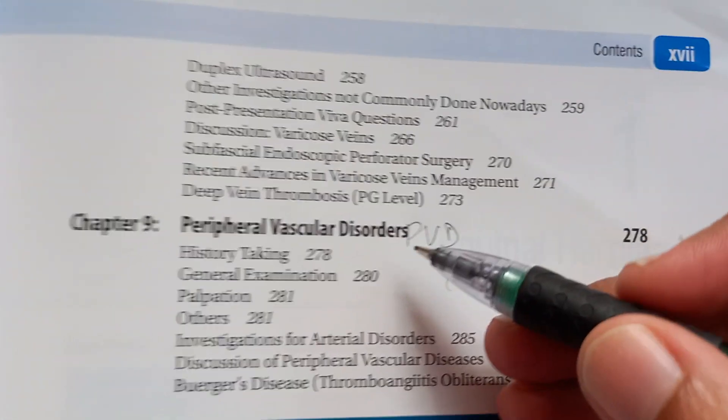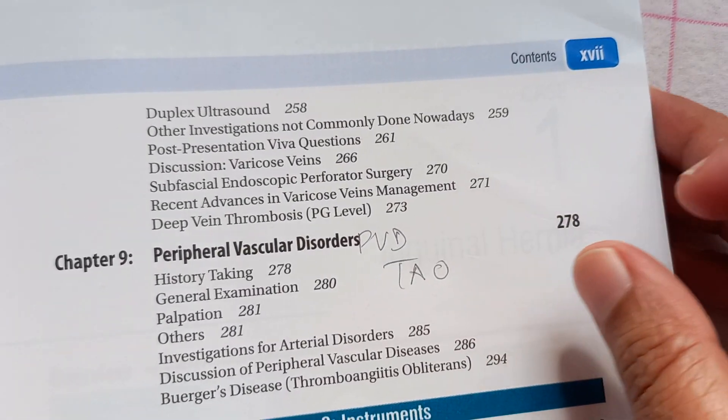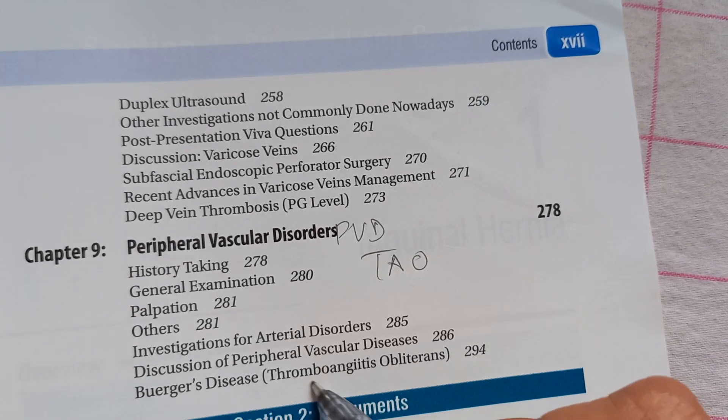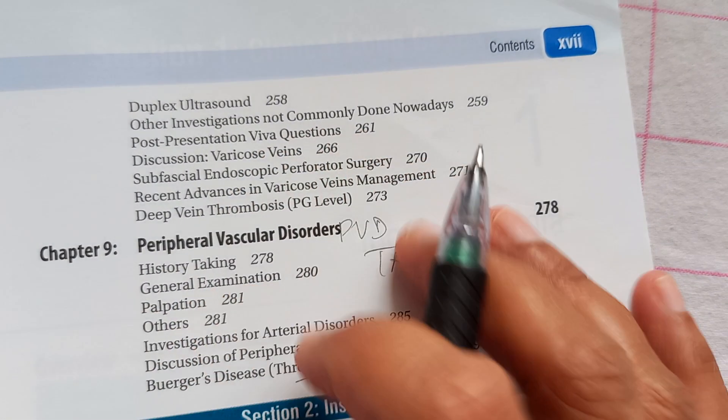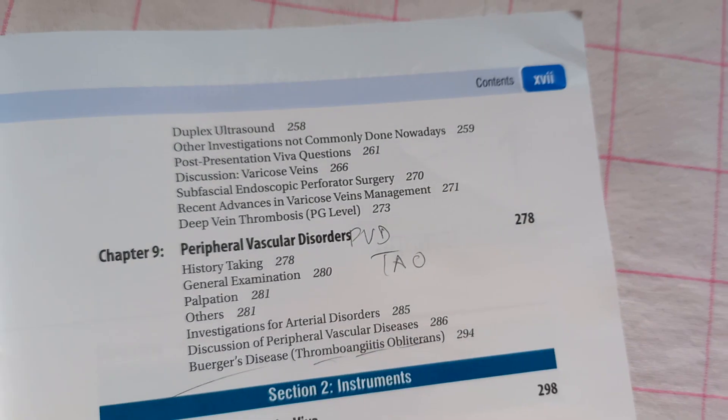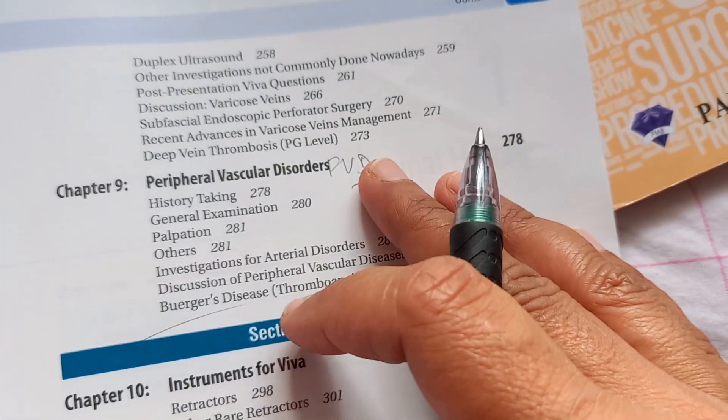Then coming to peripheral vascular disorders, that is PVD, you can have TAO, thromboangiitis obliterans. It is written here, thromboangiitis obliterans. Also, what did they say? Atherosclerosis, etc. will come here. Buerger's disease, Raynaud's phenomena, etc. comes here. Raynaud's disease, that comes here.